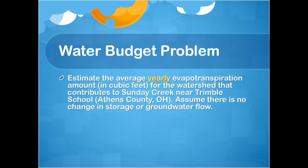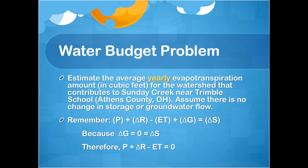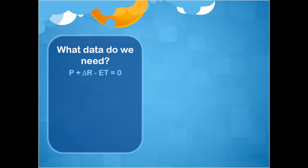Now that we understand watersheds and topo maps, let's try a water budget problem. We want to estimate the average yearly evapotranspiration in cubic feet for the Sunday Creek Watershed near Trimble High School in Athens County, Ohio, assuming no changes in storage or groundwater flow. The simplified water budget equation is: P plus delta R minus ET equals zero. We're solving for ET, so we need values for precipitation and stream discharge.